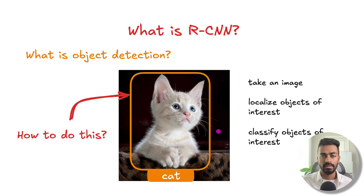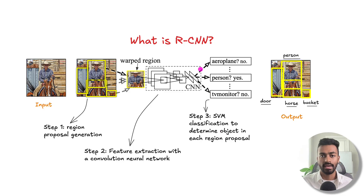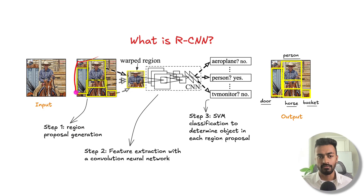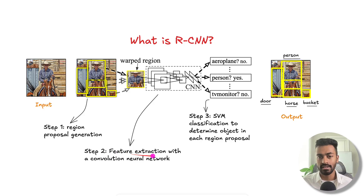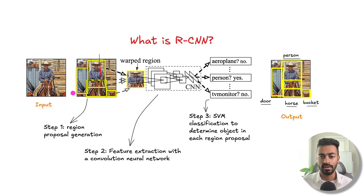So how do we do this? In 2014, a new method came out: RCNNs. The way it works is that we take an image, create region proposals — bounding boxes where objects of interest may be present — pass each into a CNN to extract features, then pass those features through SVMs to classify what object is in each region, giving us bounding boxes with labeled objects — an object detection output.